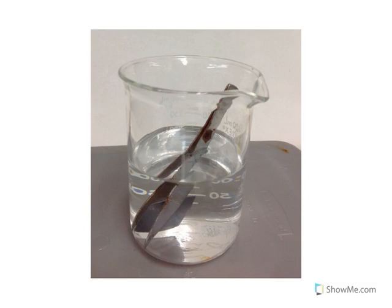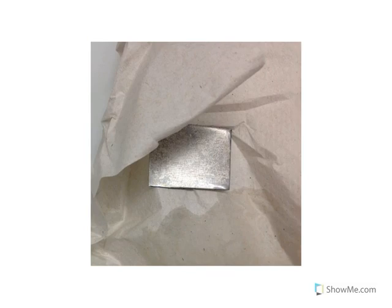Remove the metal with the forceps. Holding the metal with the forceps, rinse the metal thoroughly with tap water. Dry the piece of metal on a paper towel. When the metal is completely dry, measure and record the mass of the metal once again to the nearest one hundredth of a gram.